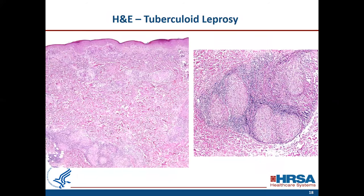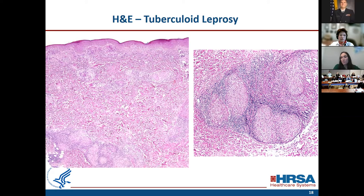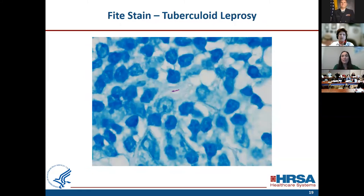When you biopsy these tuberculoid lesions, you'll see well-formed granulomas with superficial and deep involvement — perivascular, periadnexal, and perineural. Sometimes you get sausage-shaped or linear-shaped aggregates around the nerve bundles — that's the buzzword. When you see that pattern of superficial and deep involvement, think about it. Other things that can look just like this include sarcoidosis, which presents with naked granulomas and can also have perineural involvement. When you look at these, you may find just one organism or none, and we'll talk about PCR.